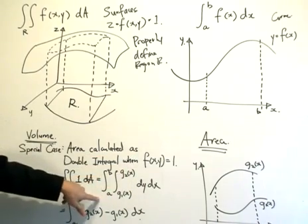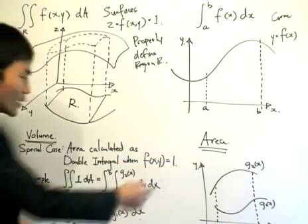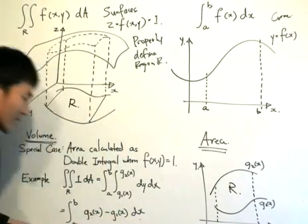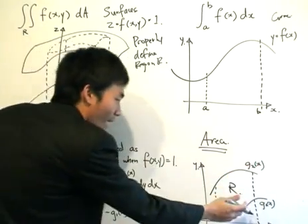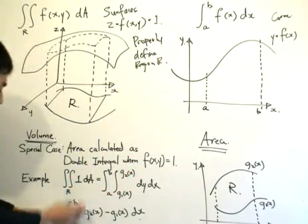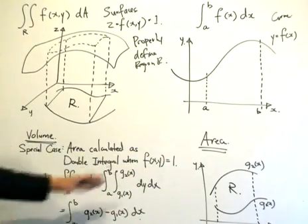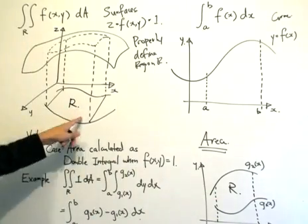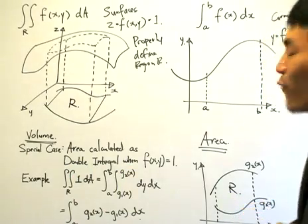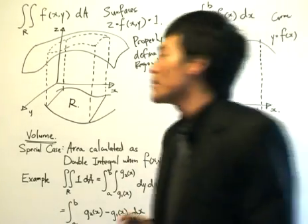If we define region R as Type 1, the double integral of 1 over R becomes an iterated integral, and when we graph it out we can see that evaluating it gives the single integral of g₂(x) minus g₁(x) — which is exactly how you calculate the area between two curves using a single integral, integrating from a to b. So letting f(x,y) = 1 and following the procedures gives you the area of region R.